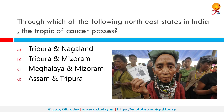Through which of the following North East states in India does the Tropic of Cancer pass? The correct answer is Tripura and Mizoram. The Tropic of Cancer passes through 8 Indian states: Rajasthan, Gujarat, Madhya Pradesh, Chhattisgarh, Jharkhand, West Bengal, Tripura and Mizoram.